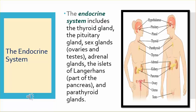The endocrine system includes the thyroid gland, the pituitary gland, sex glands — ovaries and testes — adrenal glands, the islets of Langerhans (part of the pancreas), and parathyroid glands.